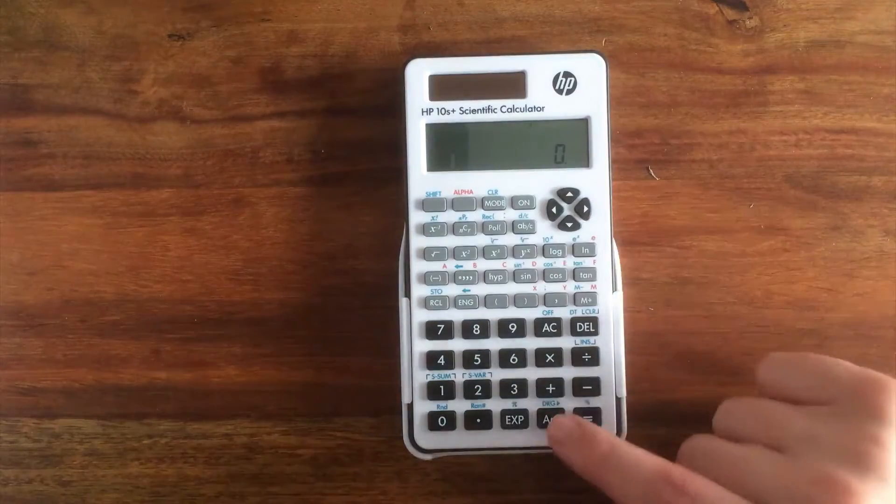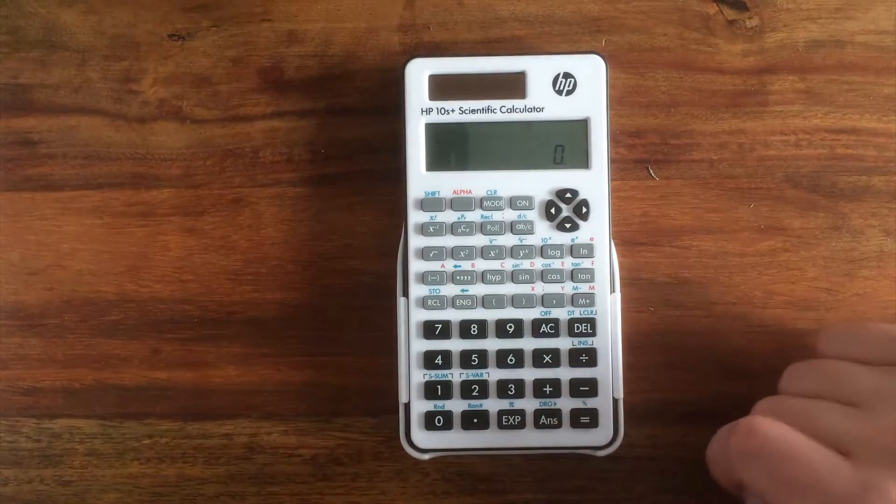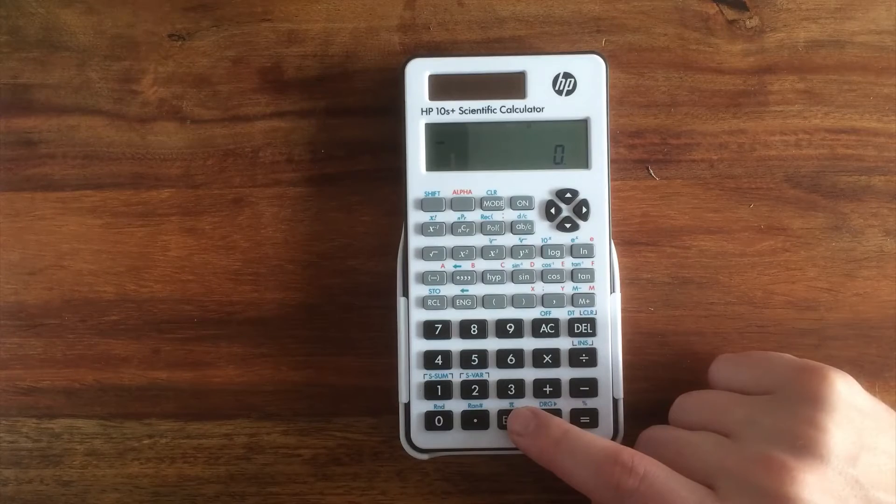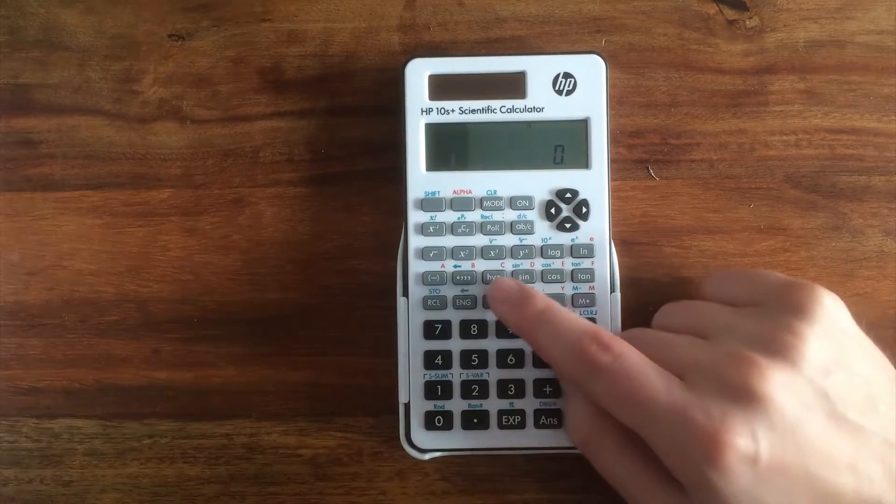So initial impressions: do have a DRG for degrees, radians, and gradients. We do have a pi function there as well. We've got the trigonometric functions, very useful.